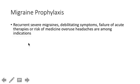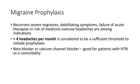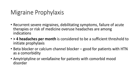For migraine prophylaxis: anyone with debilitating symptoms, more than four headaches per month, or headaches not responding to abortive therapy can get daily prophylaxis. All the preventive medicines are equally effective, so the shelf answer will be based on treating a comorbid condition. Beta blockers or calcium channel blockers for hypertension; amitriptyline or venlafaxine for comorbid depression or mood disorders; topiramate — known as 'Dopamax' on the street — is good if the patient has obesity.